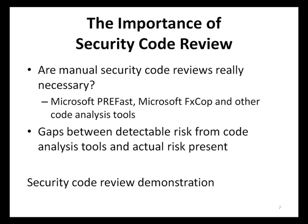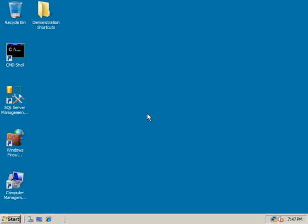To illustrate this point, let's look at a demonstration of a code vulnerability that is difficult for code analysis tools to detect, but easily detectable through conducting a security code review. In this demonstration, you will see some sample code that contains two buffer overflow vulnerabilities — one detectable by code analysis tools and one that is not. This is meant to show the importance of implementing both security code review and code analysis tools, not to use one as a replacement for the other.